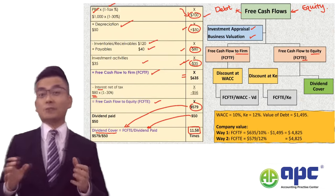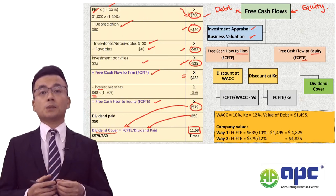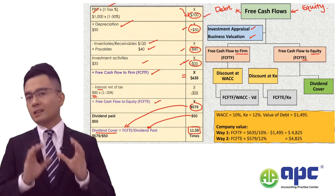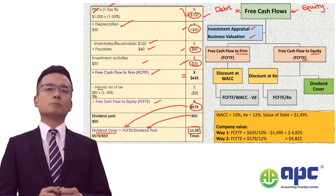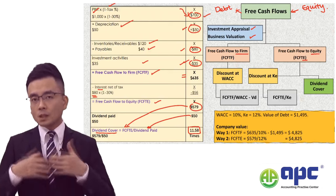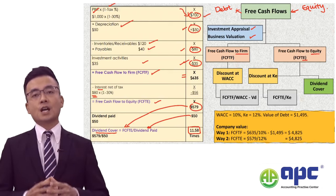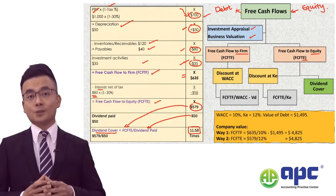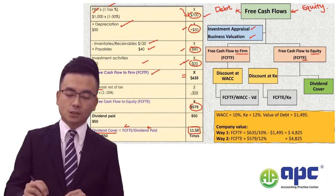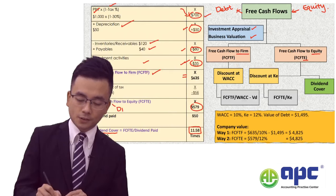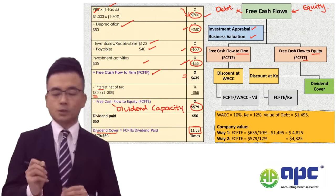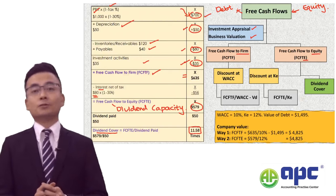You may ask: when computing dividend cover in previous papers, we used earnings per share divided by dividend per share. That approach is from a financial accounting perspective. Here, from a financial management perspective, the numerator should be the free cash flows to equity. Also note that the examiner may use the term 'dividend capacity' to refer to free cash flows to equity — be aware of that terminology.